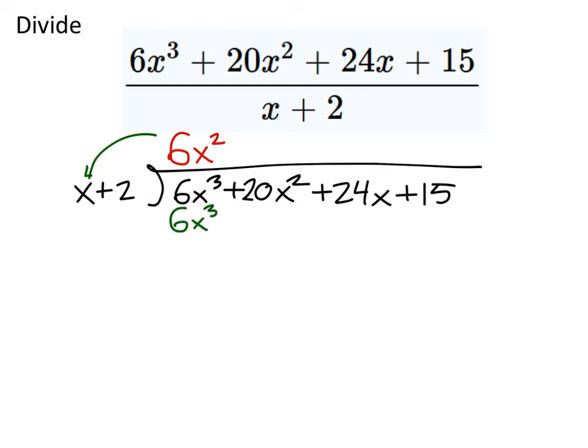x goes into 6x cubed, 6x squared times. So that's why I was just focused on the x, and seeing how many times it goes into 6x cubed. But now that I've done that, if we were to do long division, I would take 6x squared and multiply it by x, and take it out of the terms that I was just using. So I got 6x squared times the x, which is 6x cubed, which is what I wanted it to be. I've also got to take 6x squared and multiply it by 2, which is 12x squared.